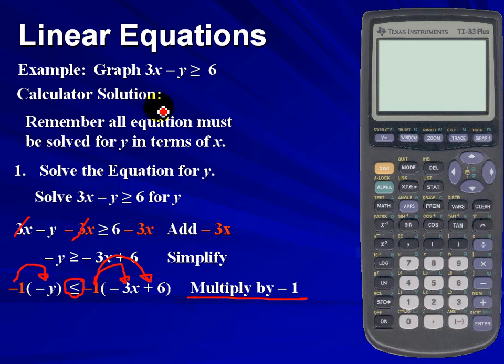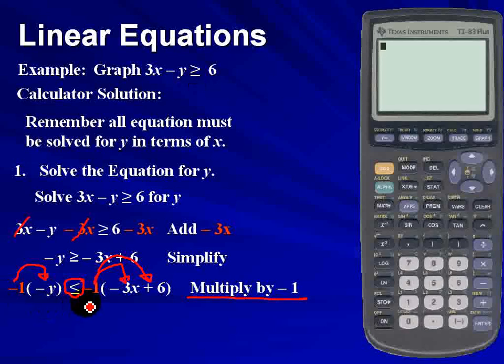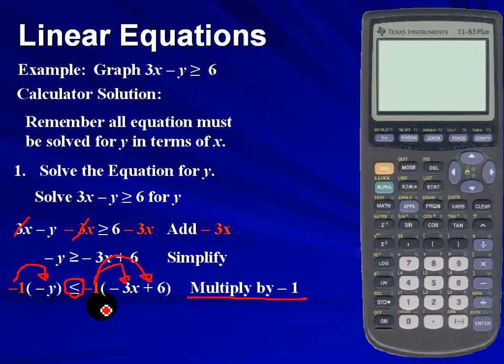Notice we started out with greater than or equal to. However, in the process we multiply by a negative number, which forces our inequality to reverse. We simplify and our equation is now y ≤ 3x - 6.